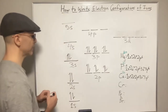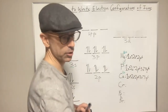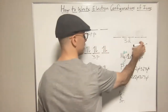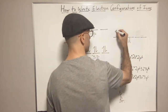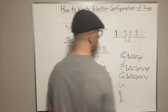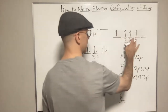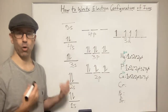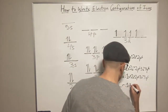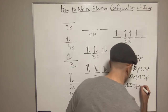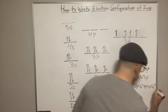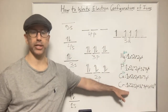Let's do chromium — this is where it gets interesting. Chromium is number 24. We have 20 electrons, and now the next highest energy level is the D. We have 4 electrons to put in, following Hund's rule: spin up, spin up, spin up, spin up — 4 electrons, all same spin, one in each orbital. The electron configuration for chromium is 1S2, 2S2, 2P6, 3S2, 3P6, 4S2, and 3D4.